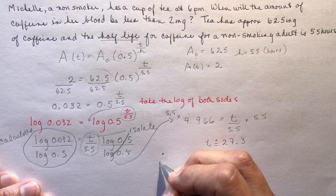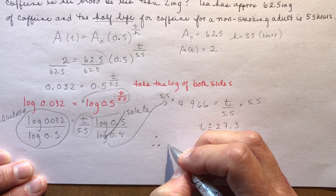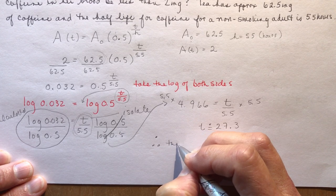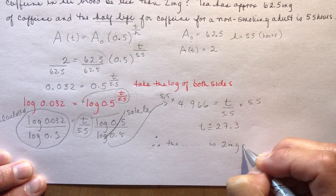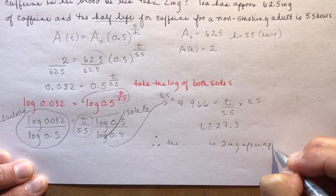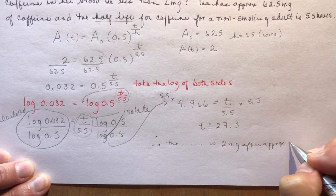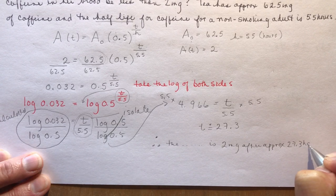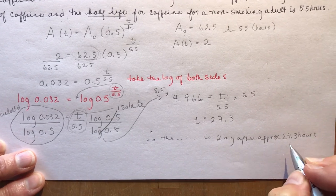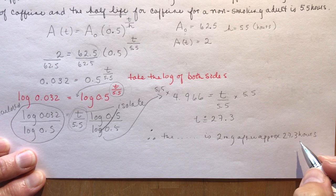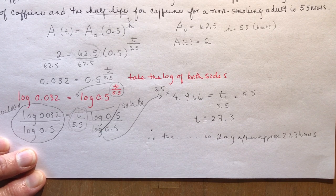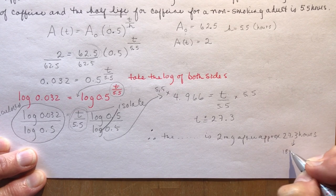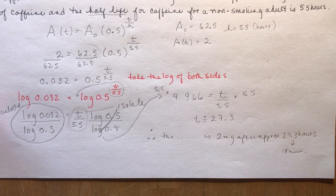Therefore, the amount of caffeine is less than 2 mg after approximately 27.3 hours. If a student gave me that answer I wouldn't be very happy — nobody talks about 0.3 of an hour. There are 60 minutes in an hour, so 60 times 0.3 gives 18 minutes. A better answer is 27 hours and 18 minutes.